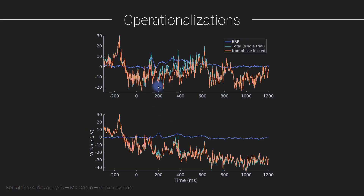Therefore, we define the non-phase-locked part of the signal as the entire signal minus the phase-locked part — that is, the single-trial signals minus the ERP. To compute the non-phase-locked part, you start by computing the ERP for one channel, seen here in blue, averaged over 99 trials. The cyan line is a single trial — the total signal. The orange line is that same single trial with the ERP subtracted off, leaving the non-phase-locked component.